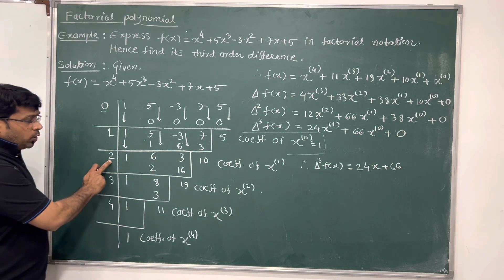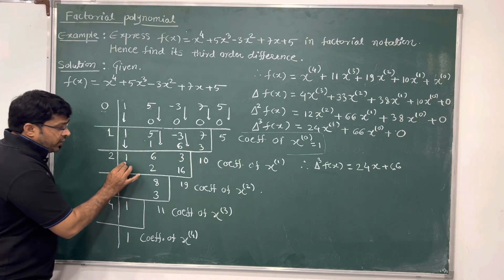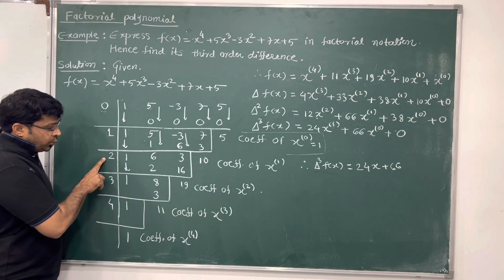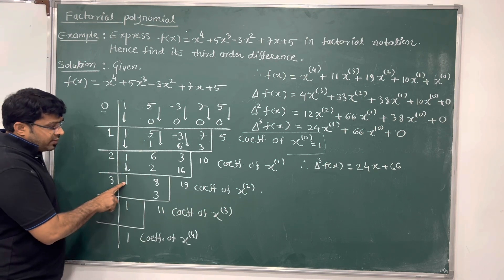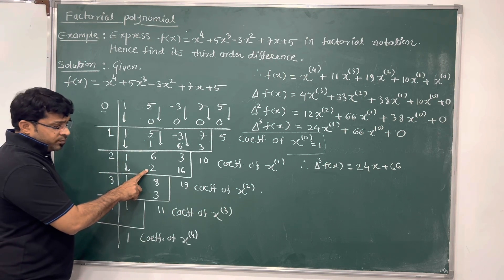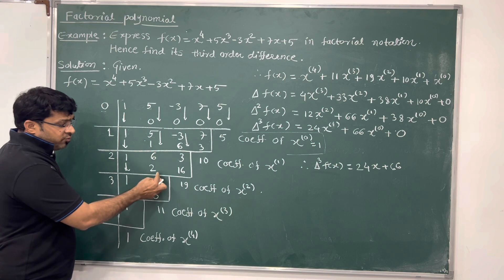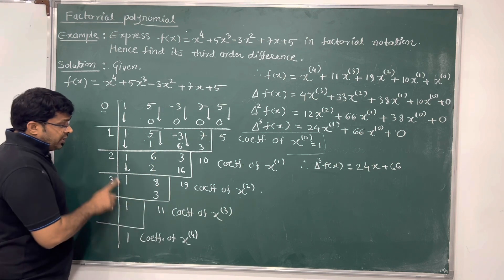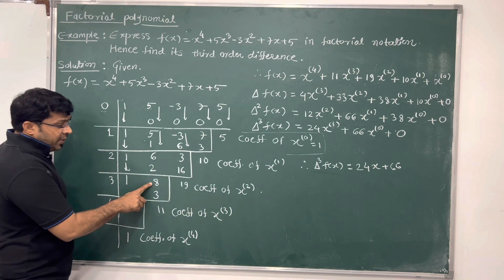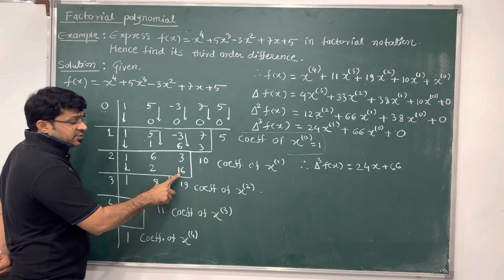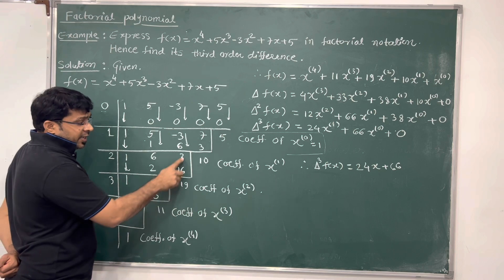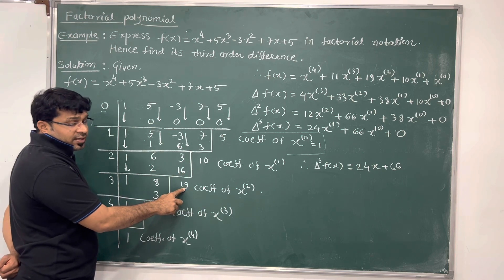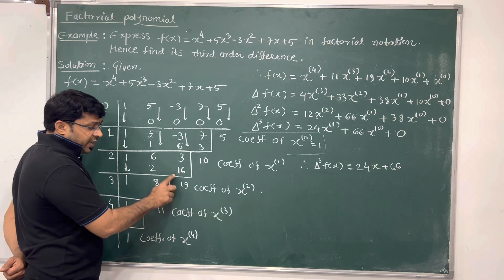Now dividing by 2. We write 1 down. Then 2 into 1 is 2. Addition of 6 plus 2 gives 8. Then 2 into 8 is 16. Addition of 3 plus 16 gives 19. We exclude this 19.